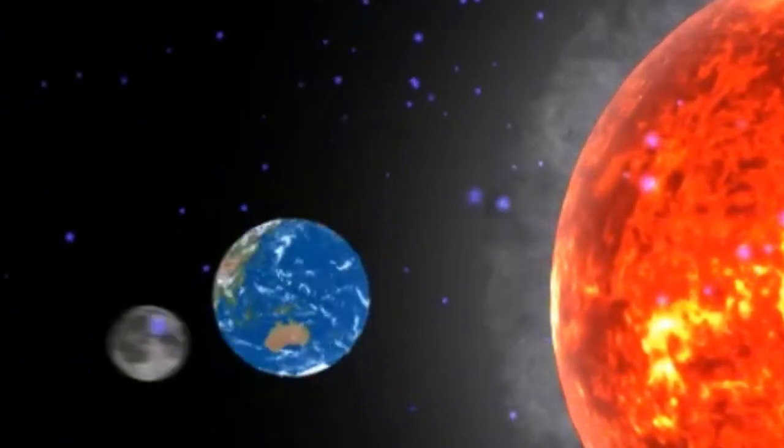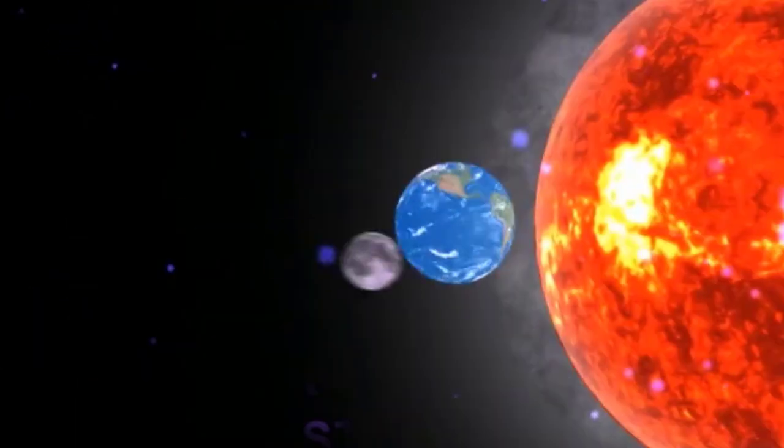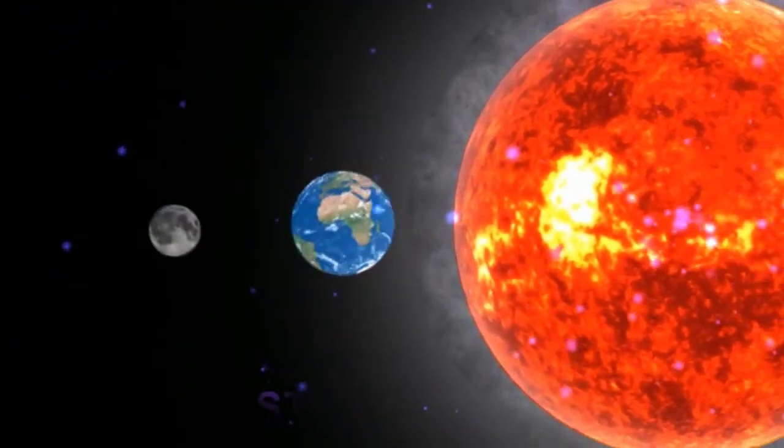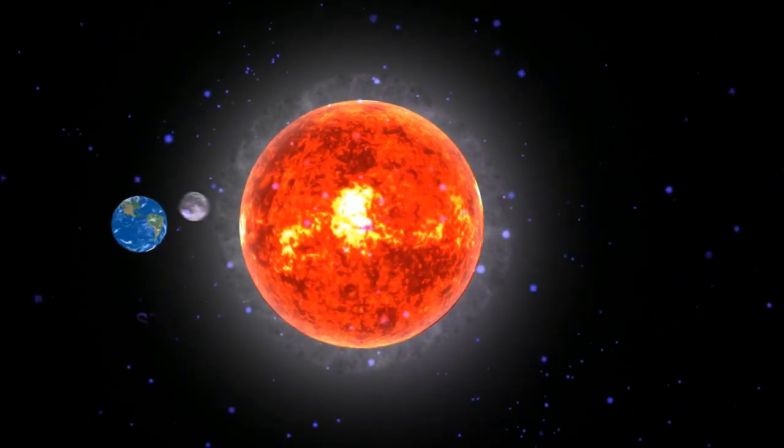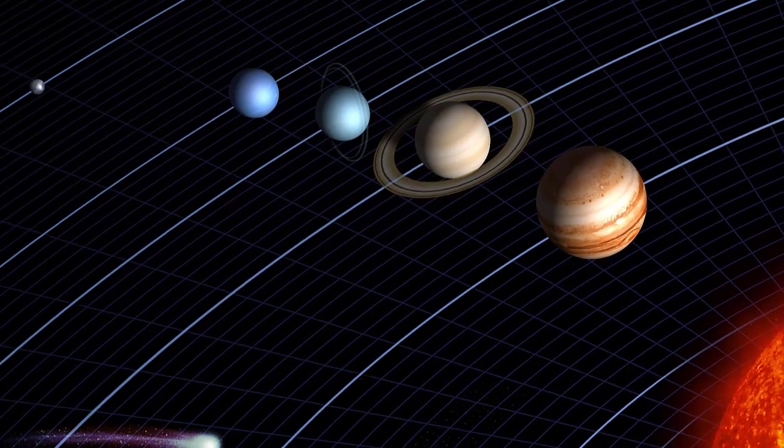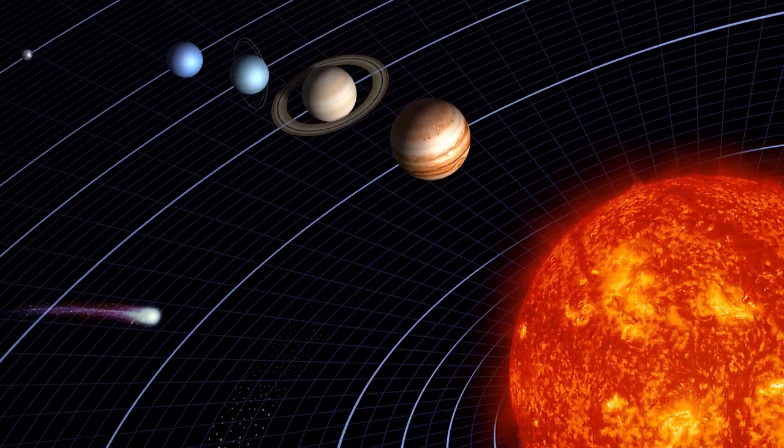So moons of planets or dwarf planets are not technically satellites of the sun. So all planets are satellites if we are talking about the sun,